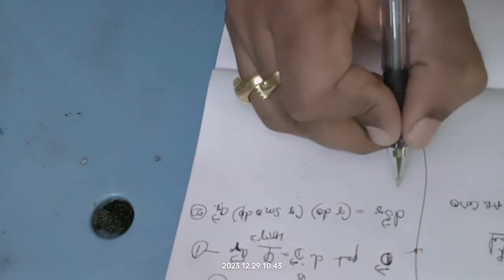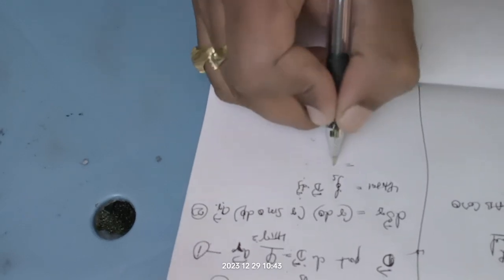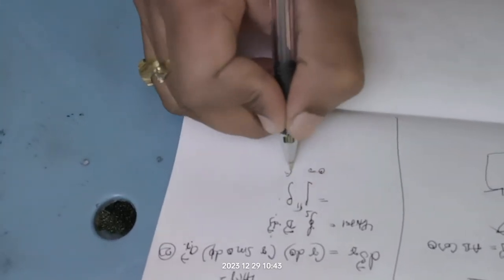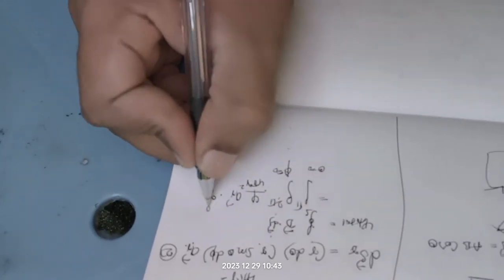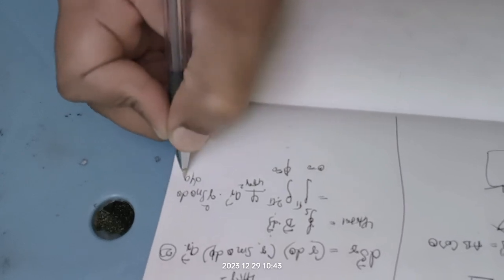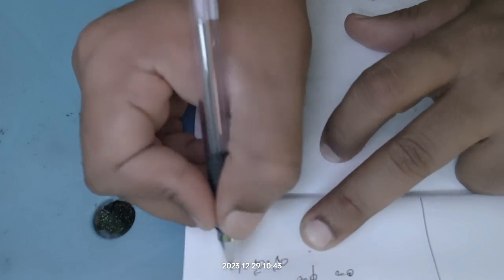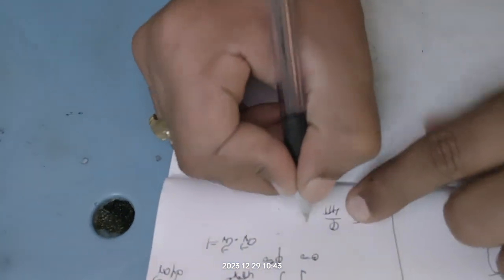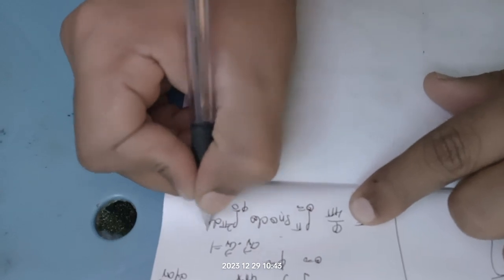Substituting equations one and two, psi-total equals the double surface integral of D dot dS. The integration limits are theta from 0 to π and phi from 0 to 2π. D equals Q over 4πr², dS equals r² sin θ dθ dφ, and a_r dot a_r equals one. The r² terms cancel, giving psi-total equals Q over 4π times the integral from 0 to π of sin θ dθ times the integral from 0 to 2π of dφ.